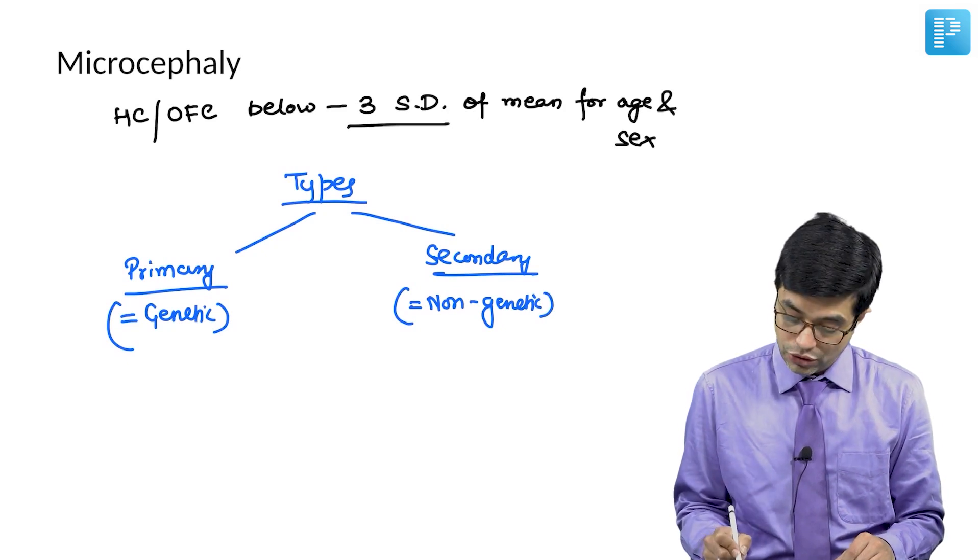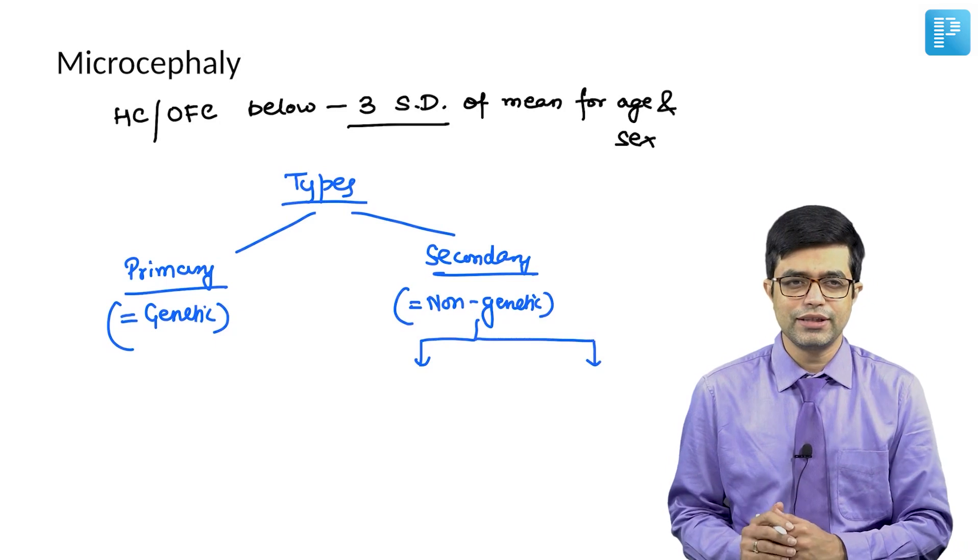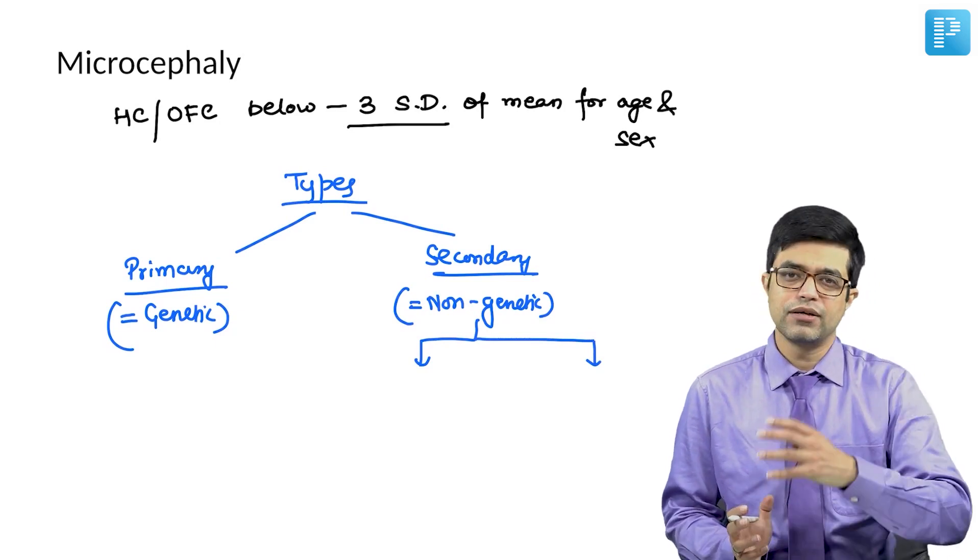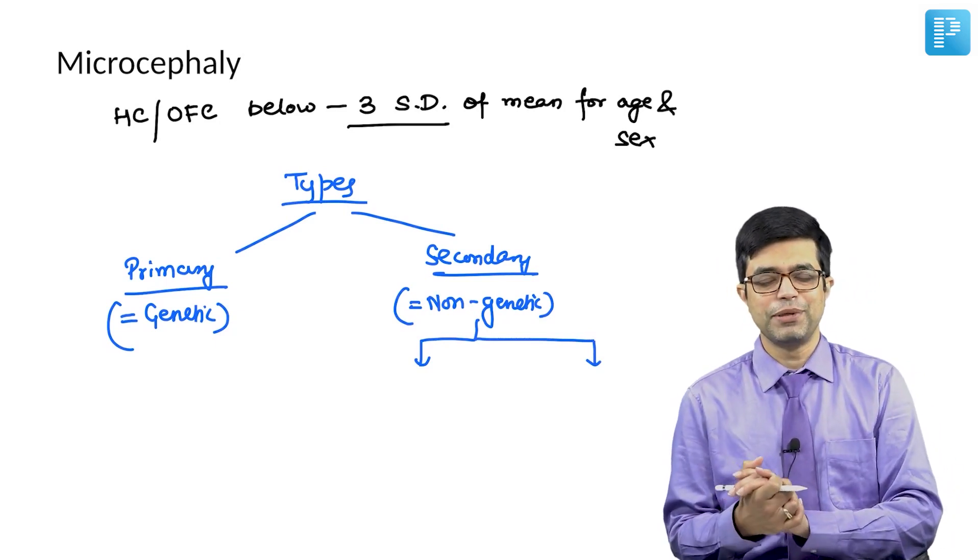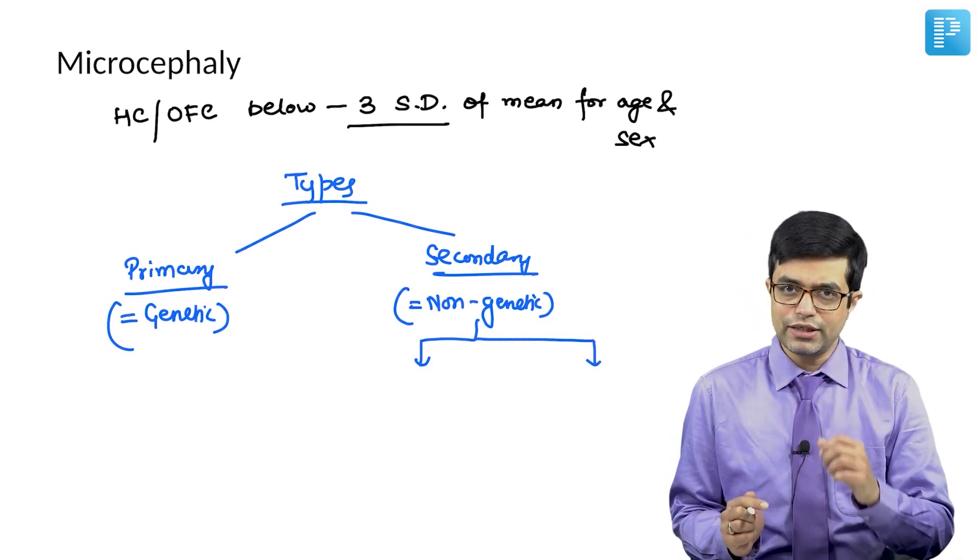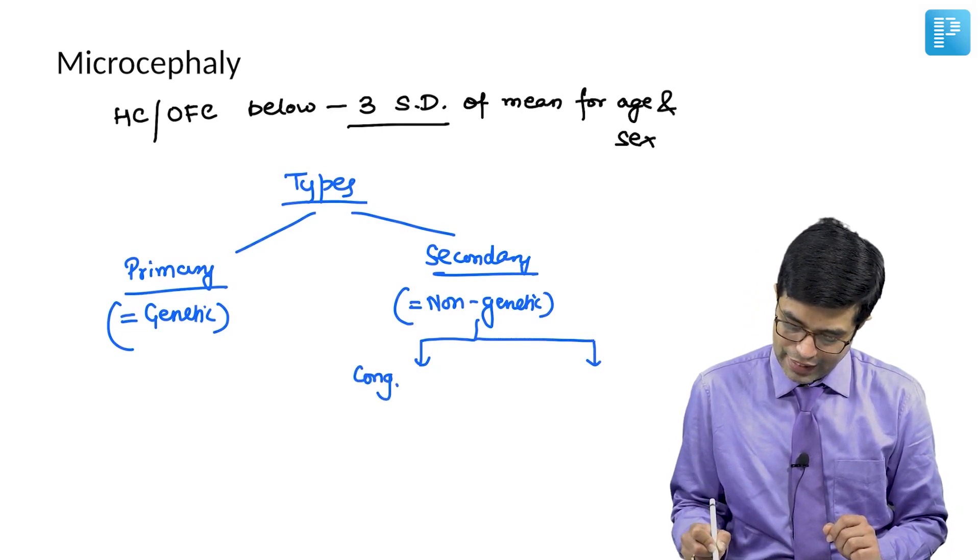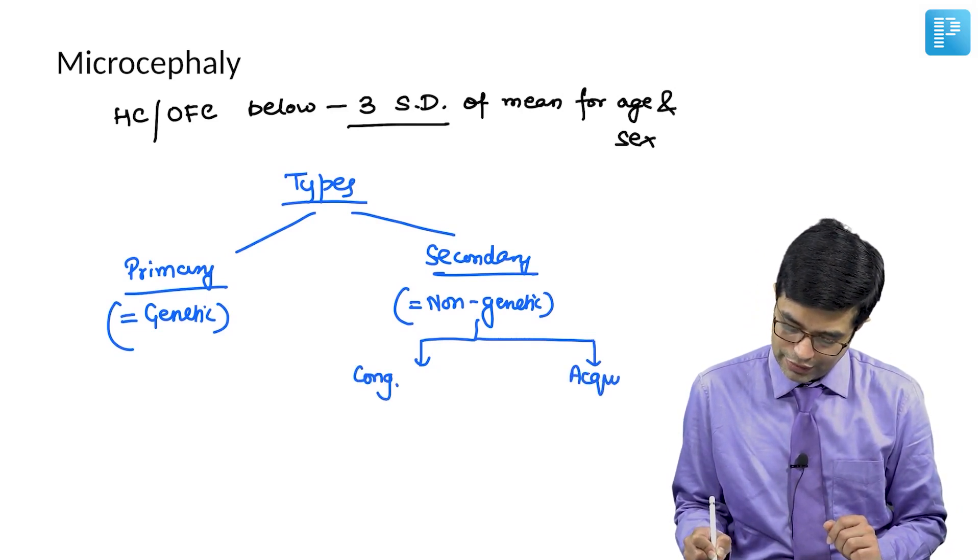The secondary cause can further be divided into two parts. Although this classification is controversial and not followed, you never know which examiner is framing your MCQs. So you need to know what is there in the literature. Secondary can further be divided into two parts: one is congenital microcephaly and second is acquired microcephaly.